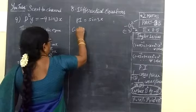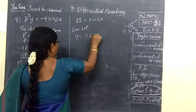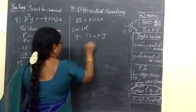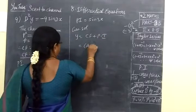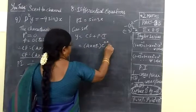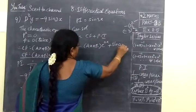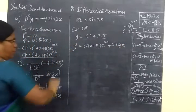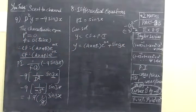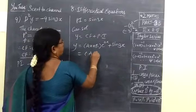Therefore, general solution y equals complementary function plus particular integral. The complementary function is A + B, so y = (A + B) + (1/9)sin3x. We see the answer.